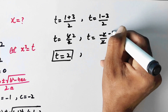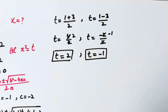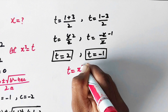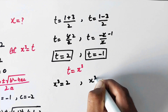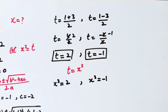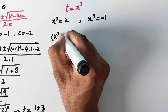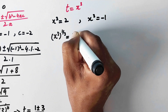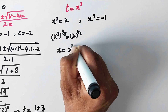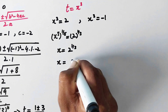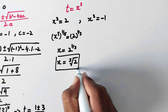4 divided by 2 gives t equals 2, and negative 2 divided by 2 gives t equals minus 1. Since we supposed t equals x cubed, from t equals 2 we get x cubed equals 2. Raising both sides to the power 1 over 3, x equals 2 raised to the power 1 over 3, or the cube root of 2.